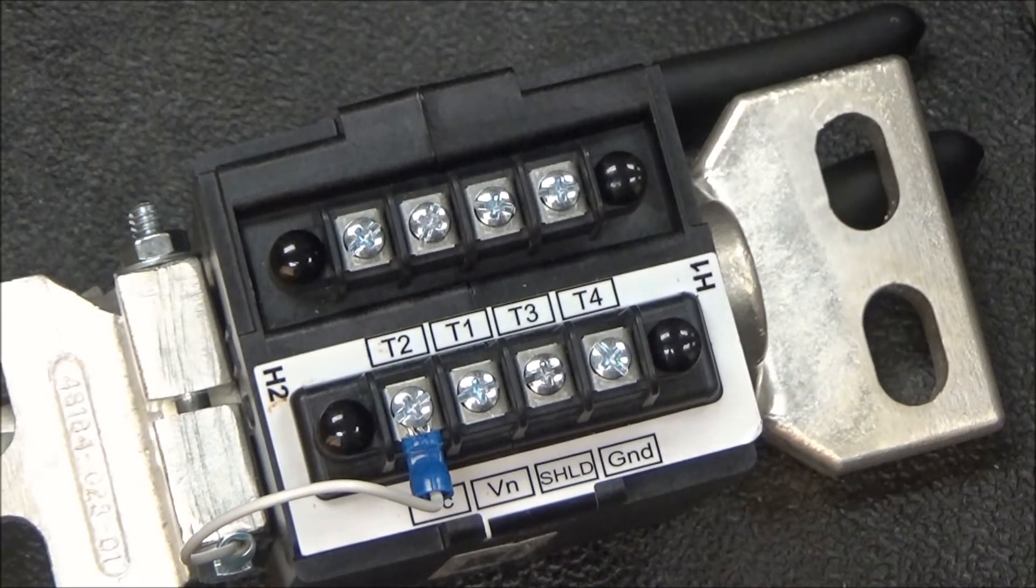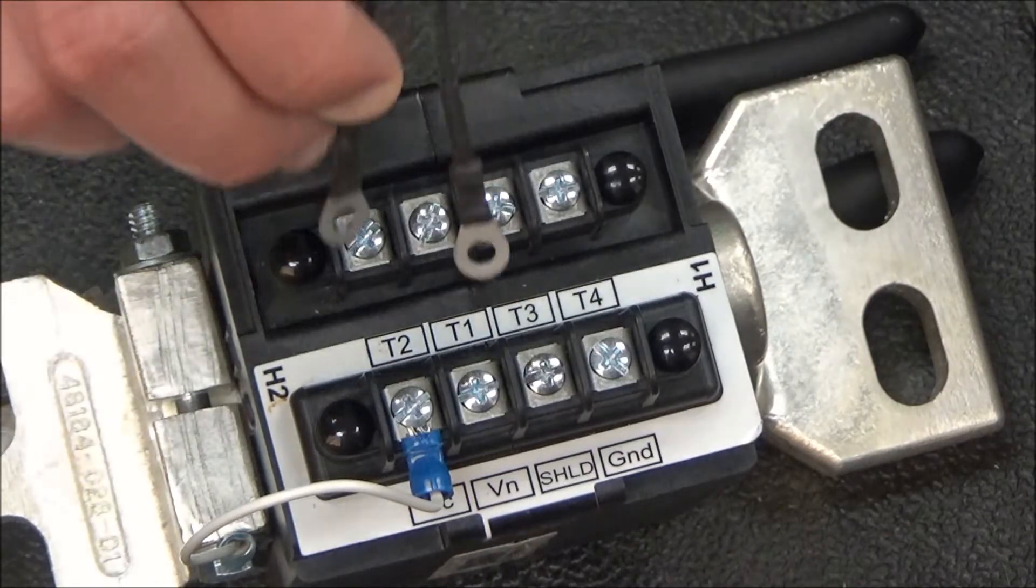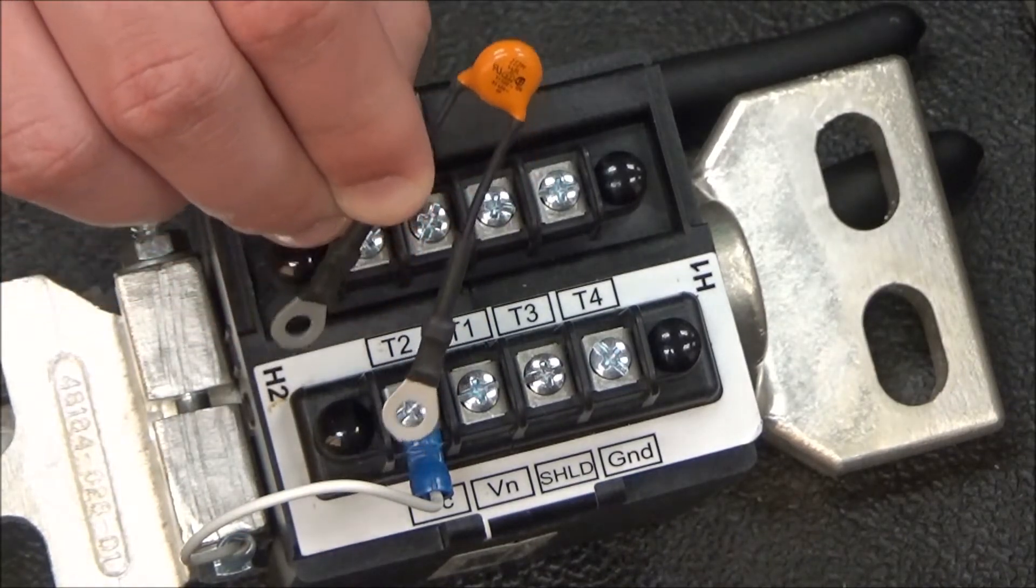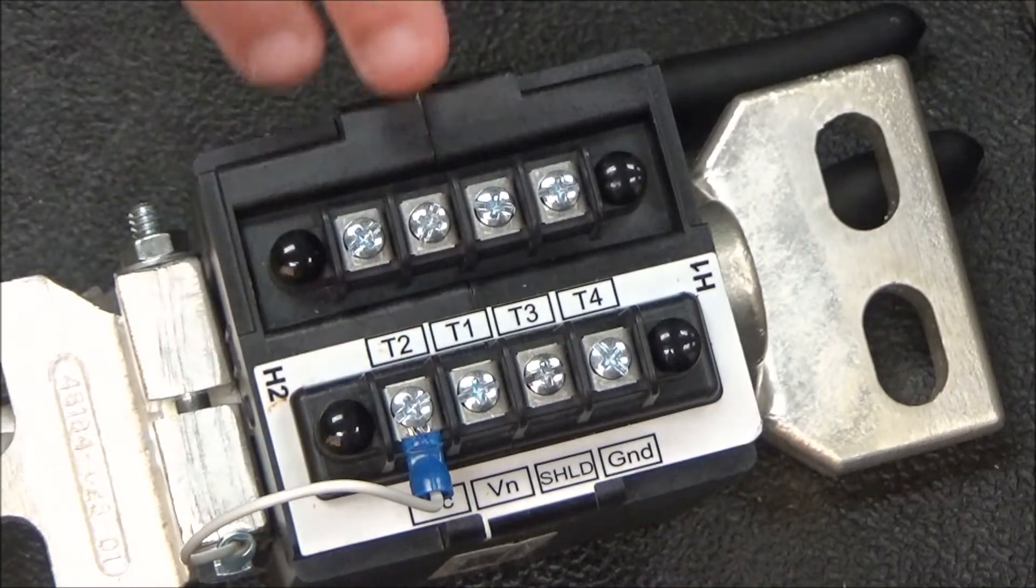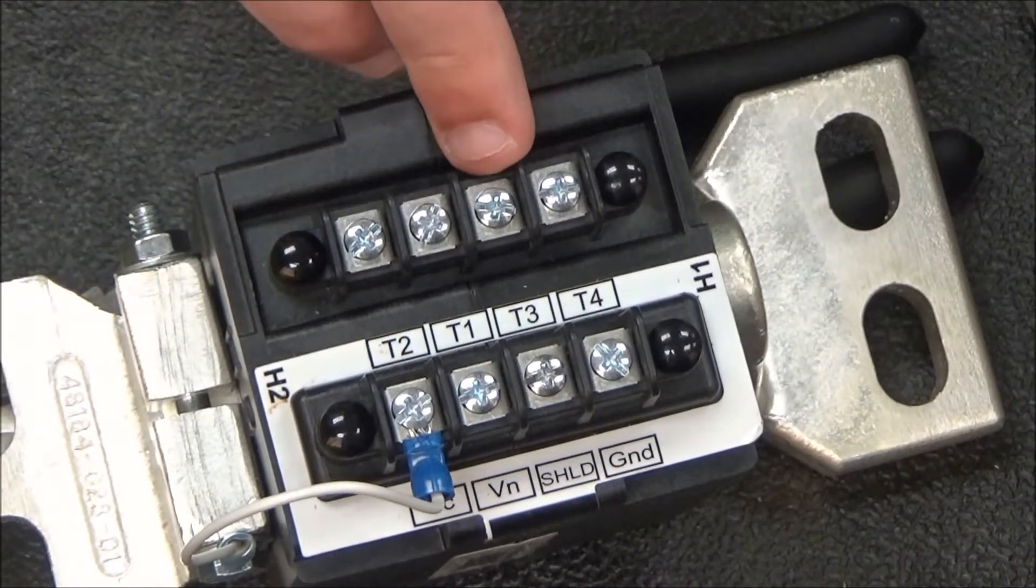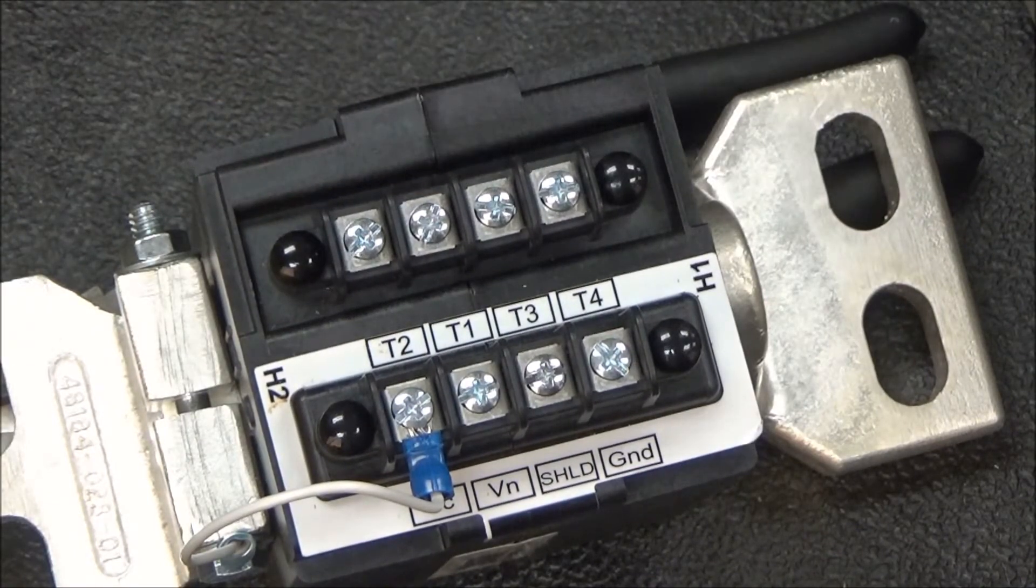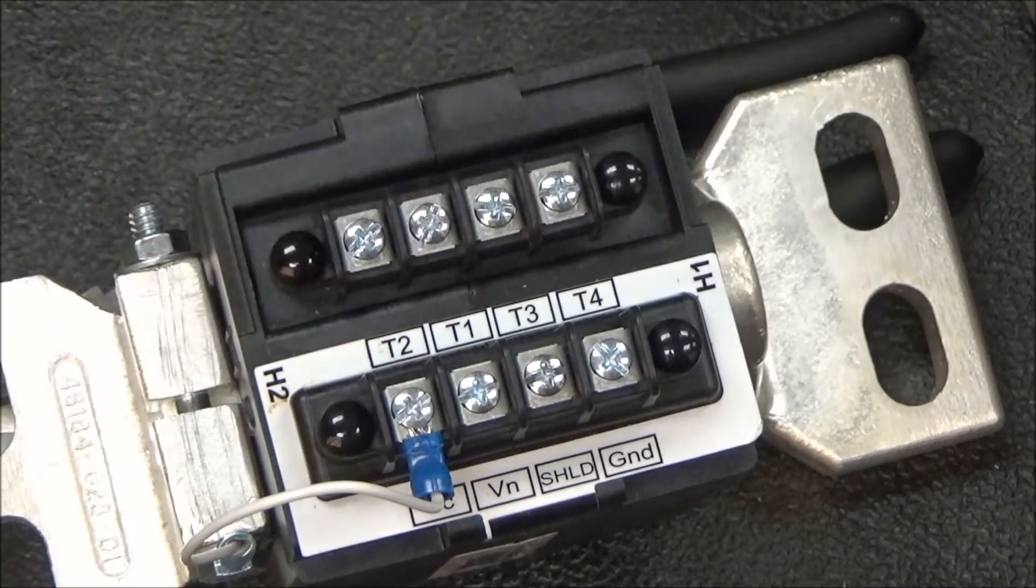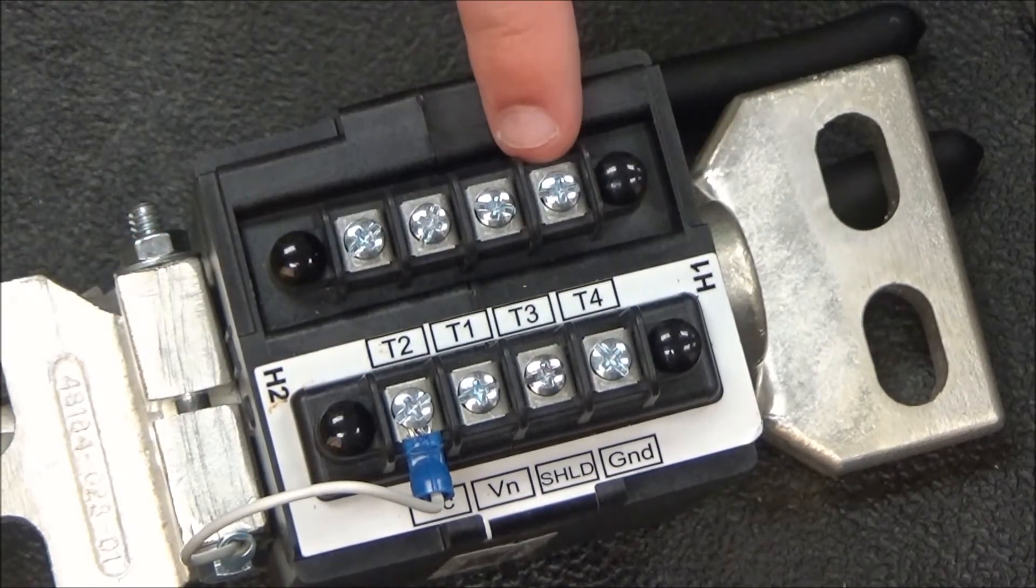You will then use the provided 2.2 nanofarad capacitor to jump between T1 and T3, and you'll use the provided jumper to jump between T3 and T4.